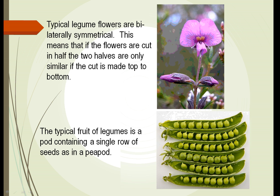Here we're looking at a typical legume flower and as I said they're bilaterally symmetrical. That means that if you cut them in half one way or the other, the halves are going to mirror each other only in one direction. So notice if you cut this flower top to bottom, this half mirrors this half. But if we cut it in half sideways, this bottom half has no mirror image at the top. That's what we mean by bilaterally symmetrical.